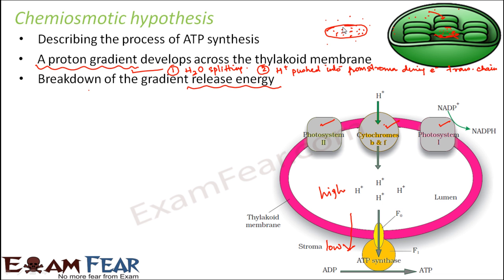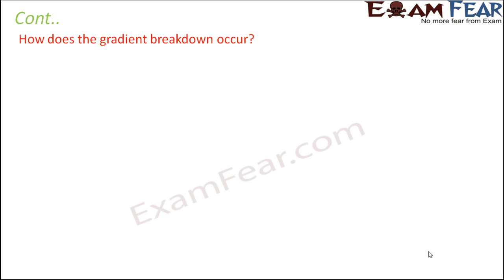The breakdown of the proton gradient releases a lot of energy. When the protons start to move from the thylakoid space to the stroma, the gradient breaks down — for example, if initially there were 100 protons inside and 10 outside, once movement begins, the difference decreases: 100 reduces to 80, while 10 increases to 30, and so on until equilibrium. This movement releases a lot of energy, which is used in the synthesis of ATP. This movement must be facilitated by another molecule.